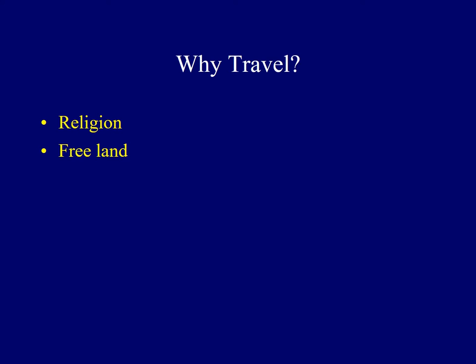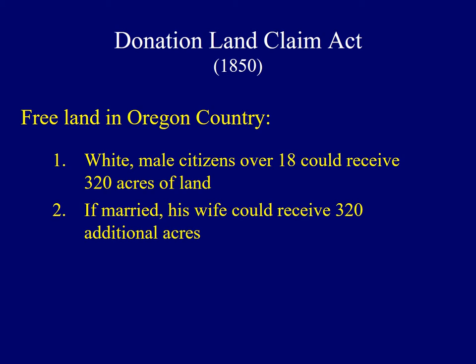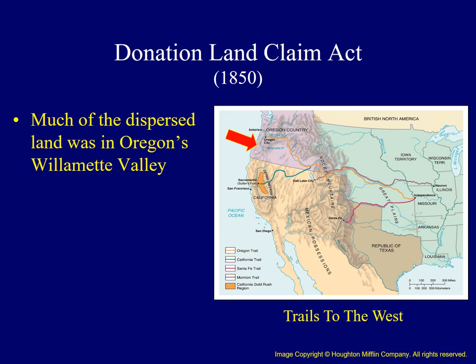Another factor influencing travel westward was the prospect of obtaining free land. To encourage settlement and reward those who had already been living in Oregon for many years, in 1850, Congress passed the Donation Land Claim Act. This offered free land in the Oregon country. Adult white male citizens were entitled to 320 acres of land, and if married, their spouse could receive an additional 320 acres in her own right. Most of this land was handed out in the fertile Willamette Valley in western Oregon.